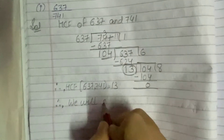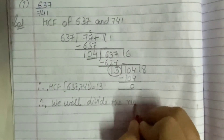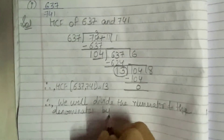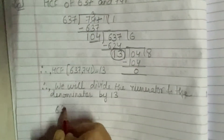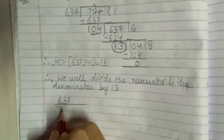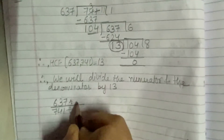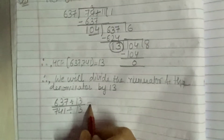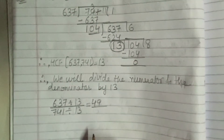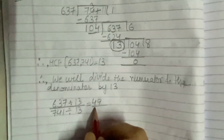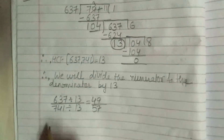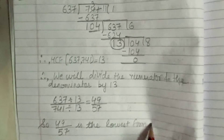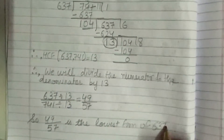Therefore, we will divide the numerator and the denominator by 13. The numerator is 637 and the denominator is 741. On dividing 637 by 13 we get 49, and on dividing 741 by 13 we get 57. So 49 upon 57 is the lowest form of 637 upon 741. Hopefully it is clear to you.